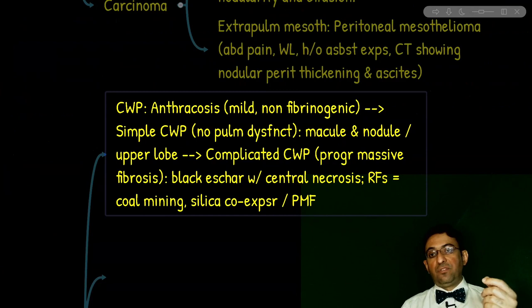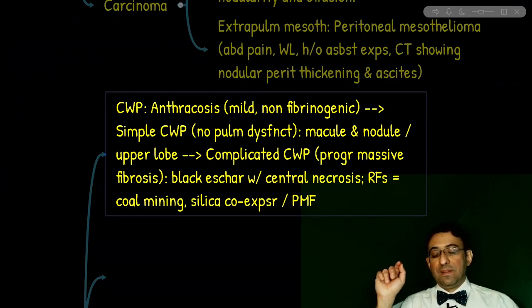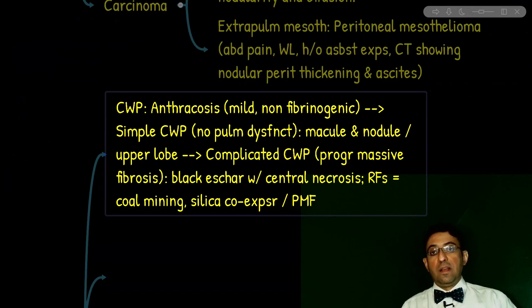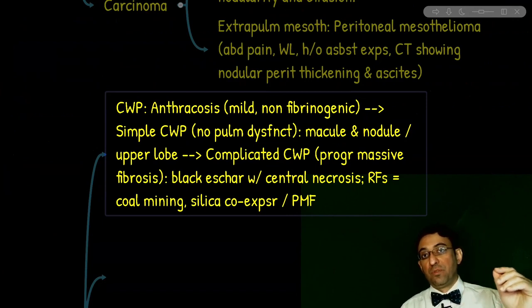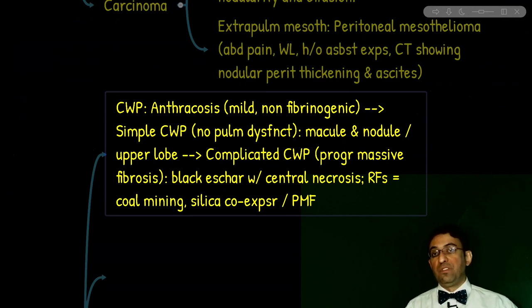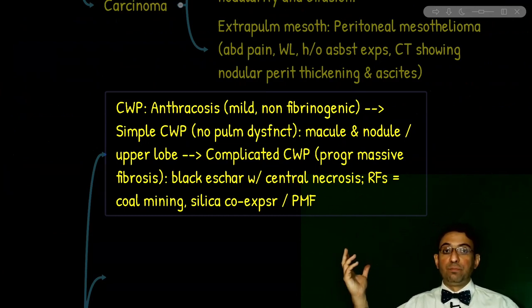What are the pathologic or imaging findings of complicated coal worker's pneumoconiosis? Always remember the term black eschar. It manifests as nodularity with central necrosis, usually larger than two centimeters, in a coal miner with restrictive pulmonary function test. The specific additional risk factor that increases risk of progression to complicated CWP or progressive massive fibrosis is concomitant silica exposure in addition to carbon dust exposure, ultimately reaching progressive massive fibrosis with cobblestoning.